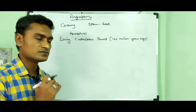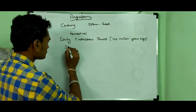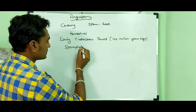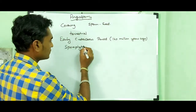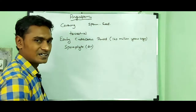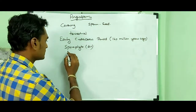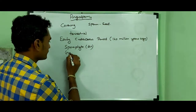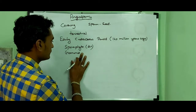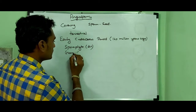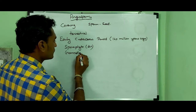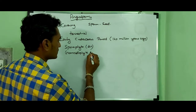In this plant group, the dominant phase is the sporophyte. The highly reduced phase is the gametophyte phase.